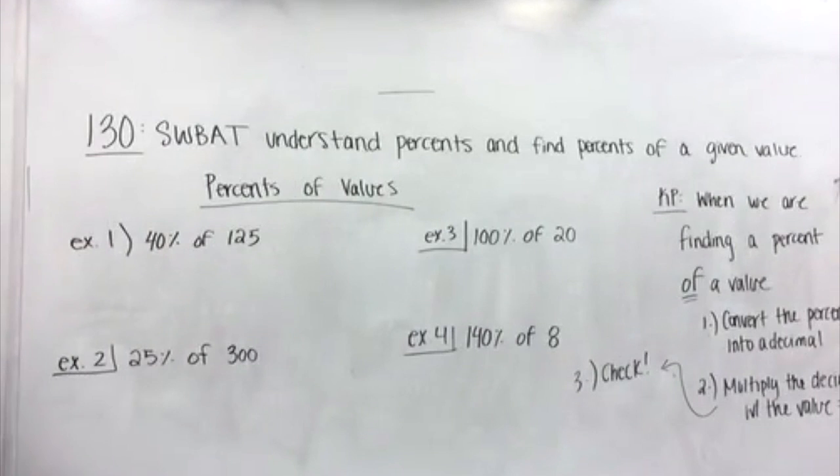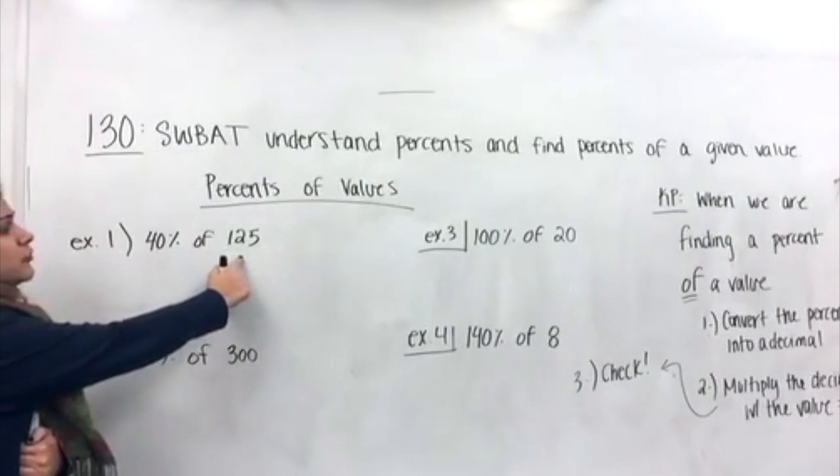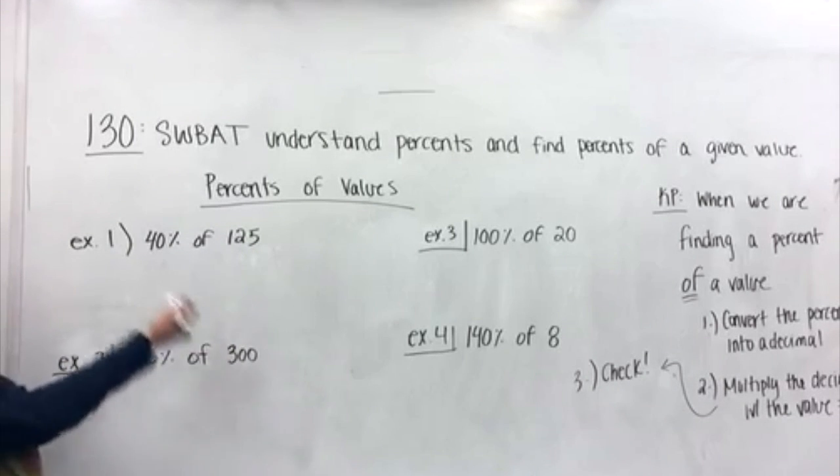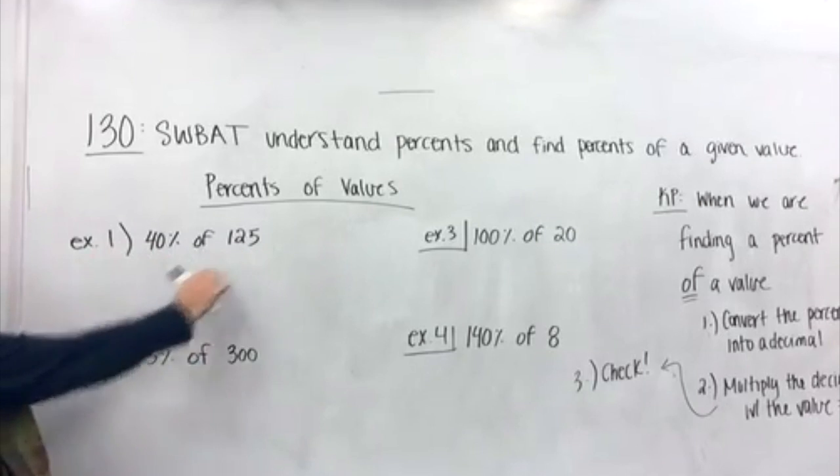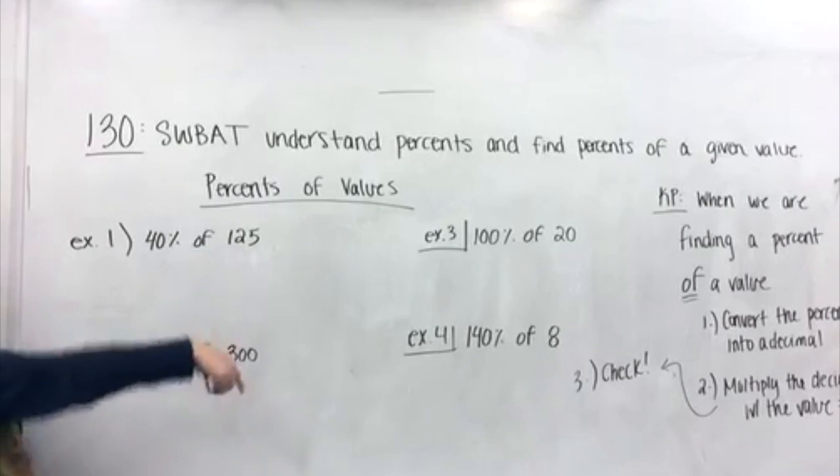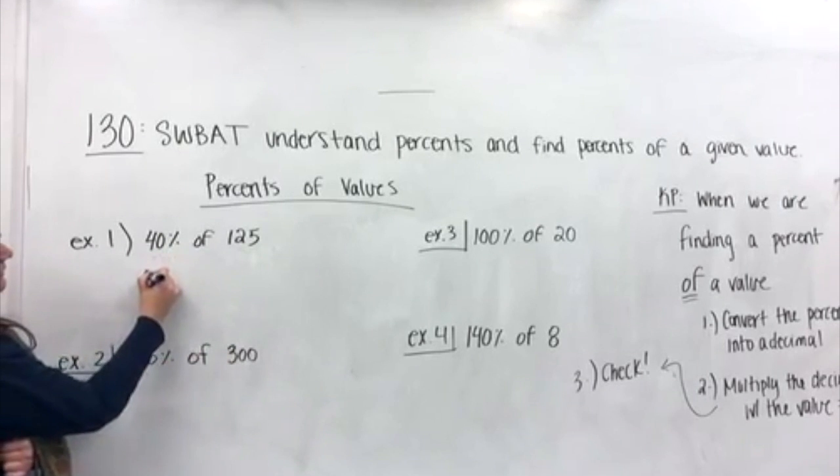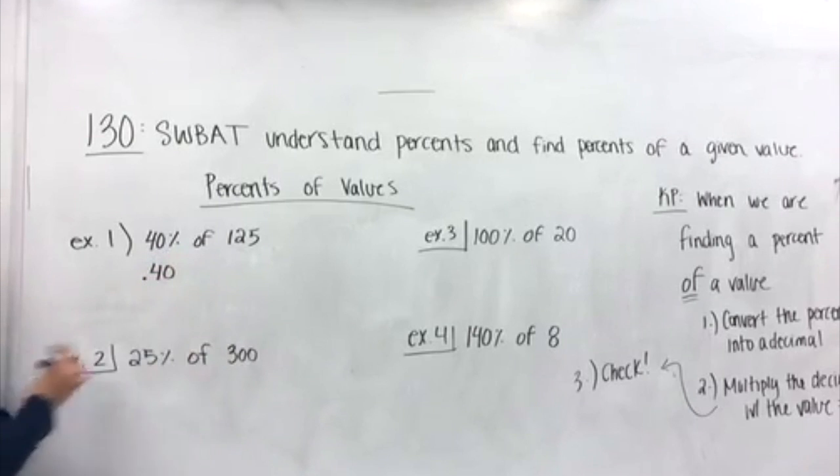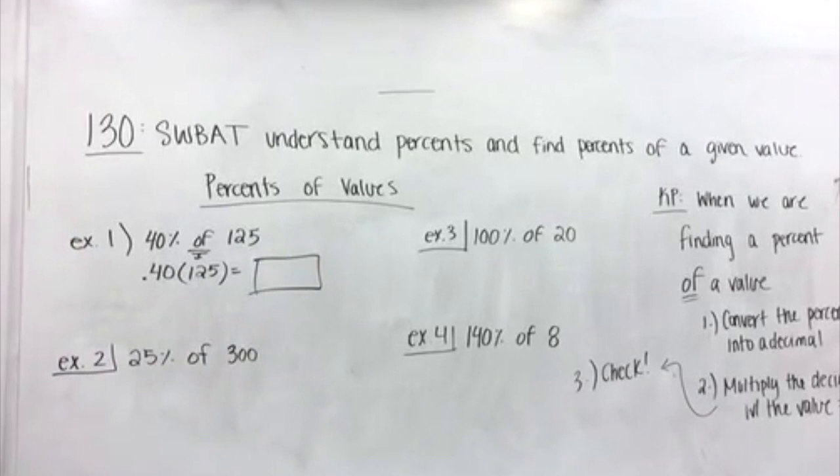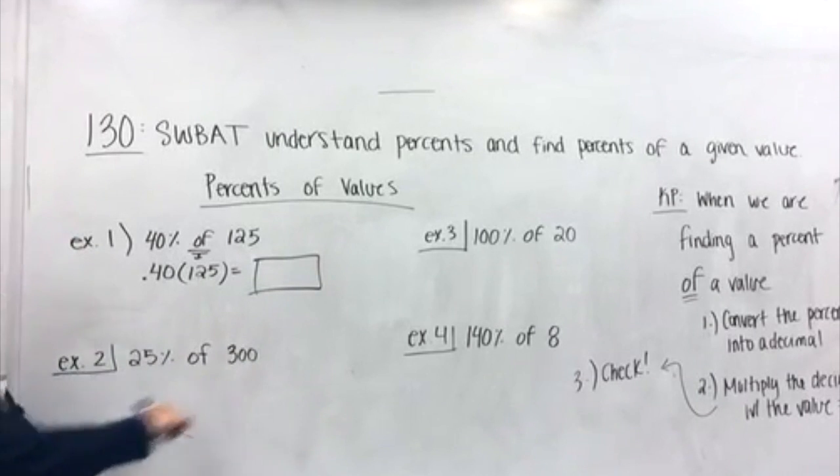So, walking through example one, 40% of 125. Now, think about it this way. If we had 100%, we would have 125. So, it's not going to be bigger than 125. It's actually just a little bit smaller than half of 125. Because 50% would be halfway to 125. So, following those steps, 40% is 0.40 of means we can multiply by 125. Go ahead and figure that out. And we'll review it in class.